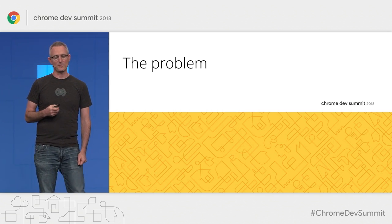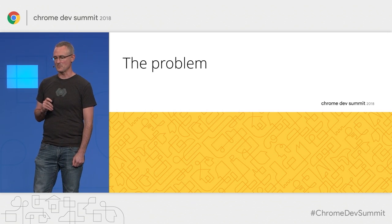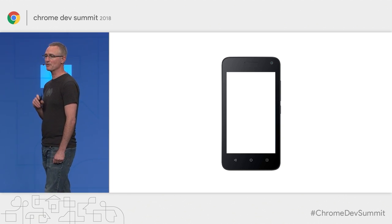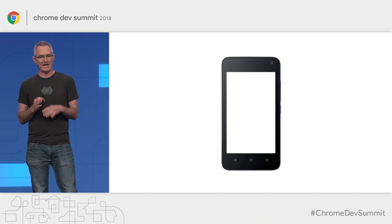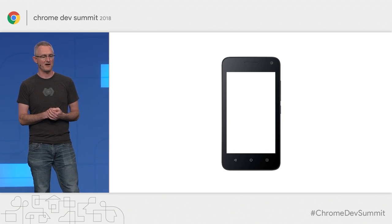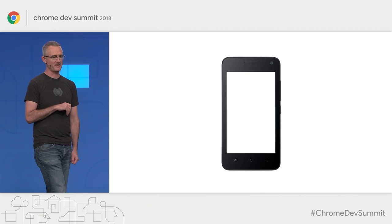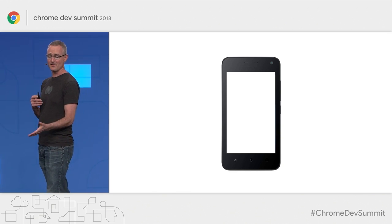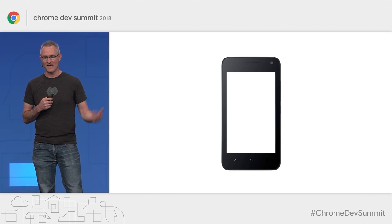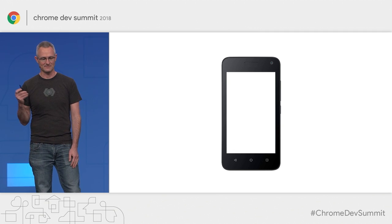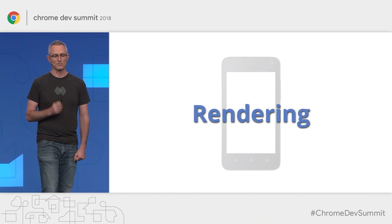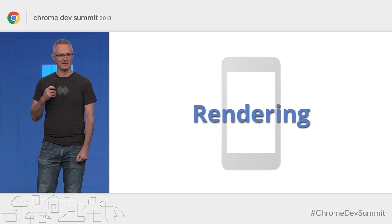To really understand the nature of the performance problems we're trying to solve, it'll help to look at some examples. Since problems are the worst on low-end devices, we use a typical Android Go phone for this exercise. I recorded a bunch of real-world interactions for this talk, but I ended up creating dramatic reenactments in DevTools with CPU throttling turned on. What you'll see here is representative of the performance on the real device.